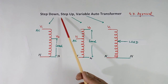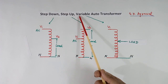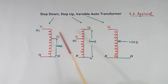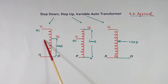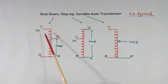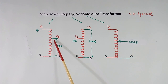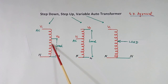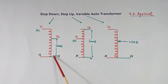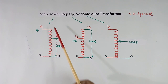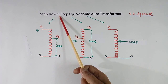There are three types: step down, step up, and variable auto transformer. In the step down transformer, AC input is connected at the top. There are multiple tapping points. At the output side where the load is connected, turns are less. If turns are less, voltage will also be less. The voltage is coming down, so it is called a step down transformer.